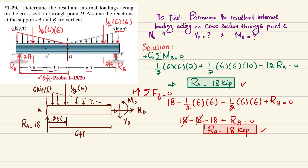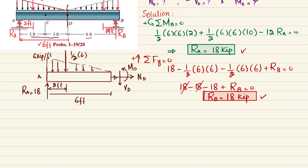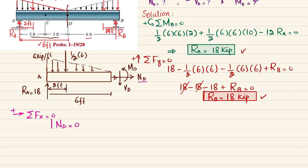Applying equilibrium conditions to the free body diagram: the first condition is the sum of all forces in the horizontal direction equals zero, with rightward forces positive. The only horizontal force is ND and there are no others, so ND = 0.